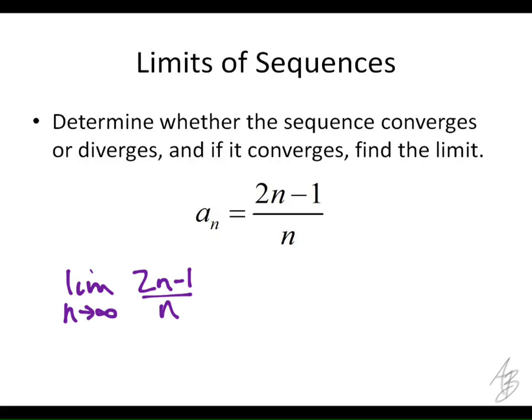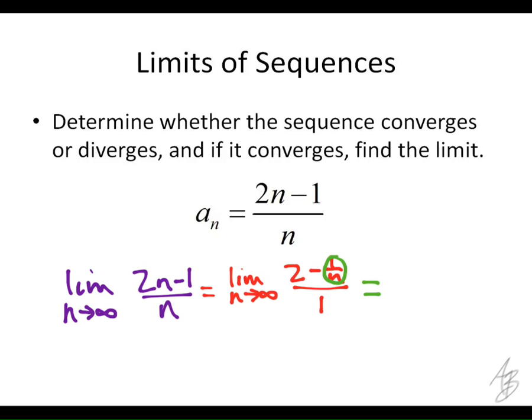Now we did some limits just like this early in the school year, back in August and September. There was a shortcut that says if the degree on top is the same as the degree on the bottom, then we divide the leading coefficients. The trick is, if I divide every term by n, then what I get is (2 minus 1/n) all over 1. As n goes to infinity, the 1/n term gets closer and closer to 0, so this equals 2 over 1, which is 2.